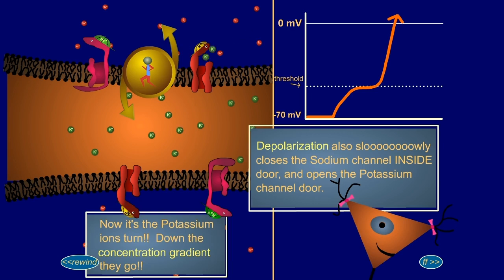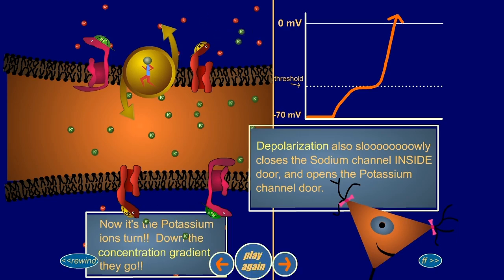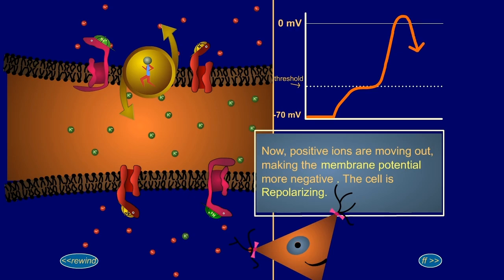Now it's the potassium ions' turn. Down the concentration gradient they go. Now, positive ions are moving out, making the membrane potential more negative. The cell is repolarizing.